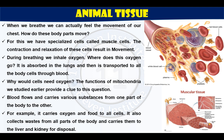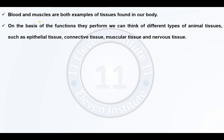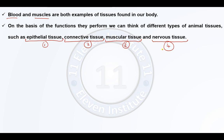This is the image of muscular tissue — you can see there are many cells and bundles. These muscular tissues are responsible for movement in our body. This is the introductory part of animal tissues, and we have seen two examples: blood and muscles. On the basis of the function they perform, we can think of different types of animal tissues, and we have four: epithelial tissue, connective tissue, muscular tissue, and nervous tissue.